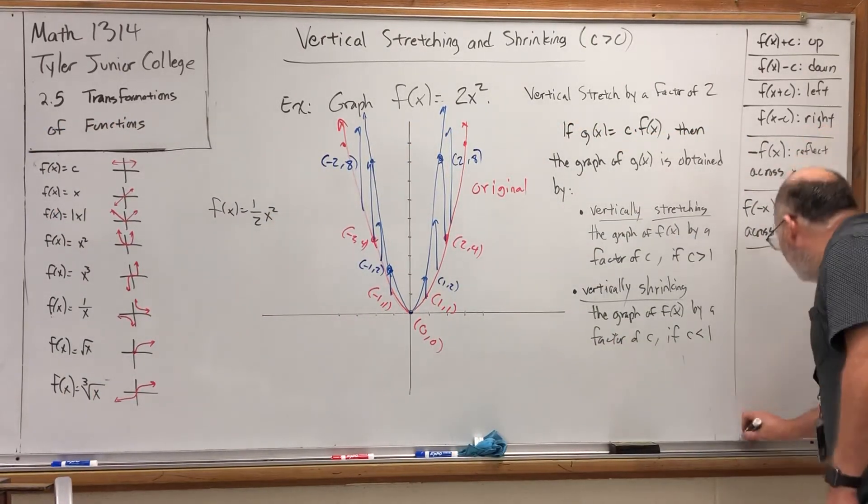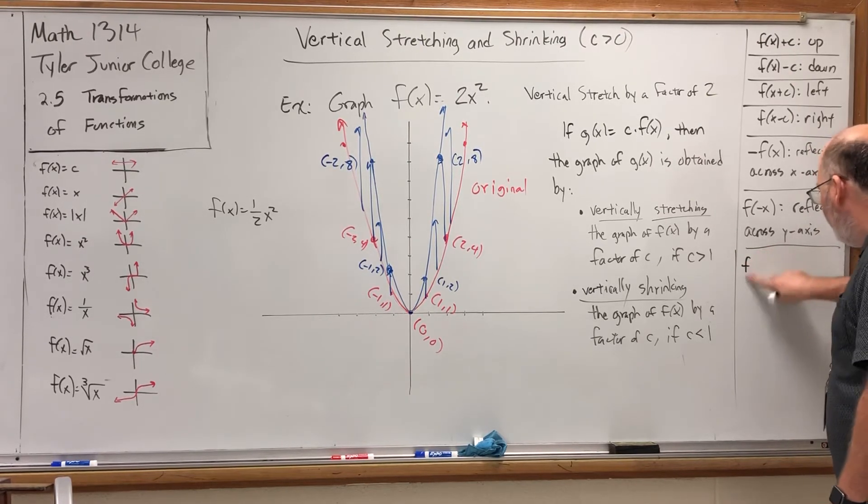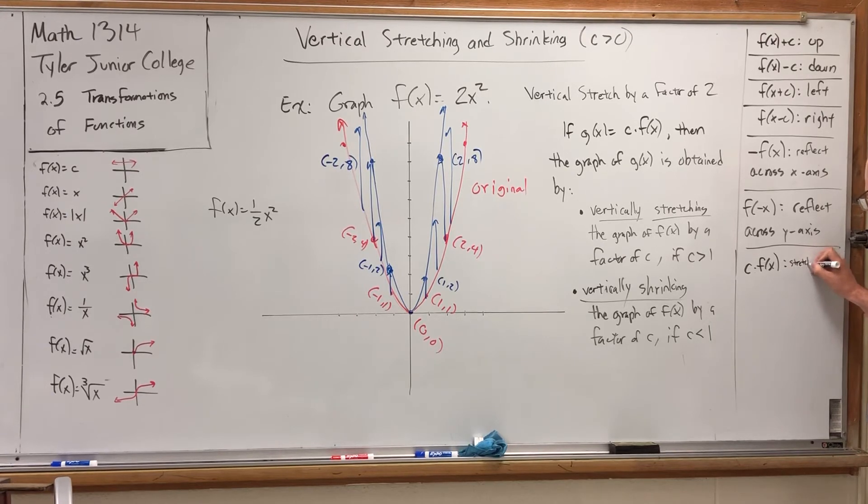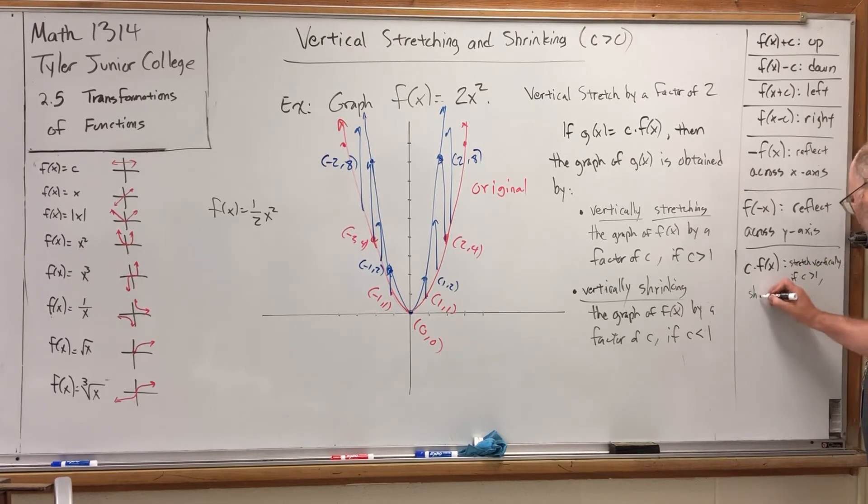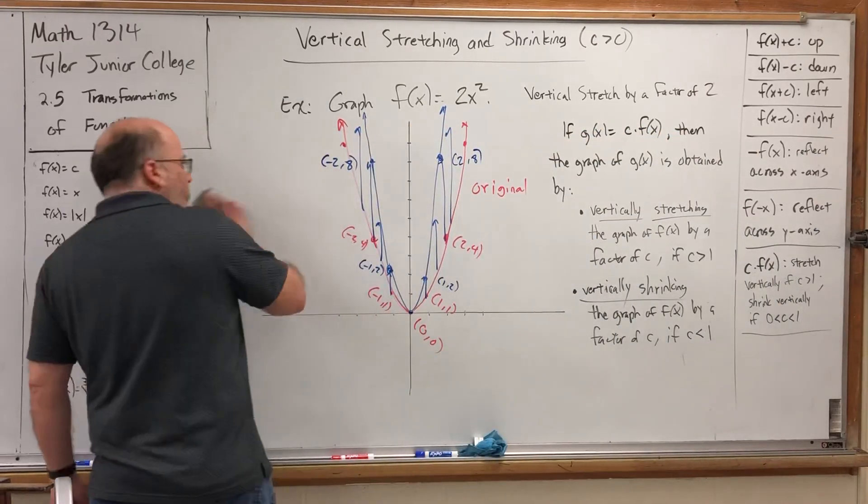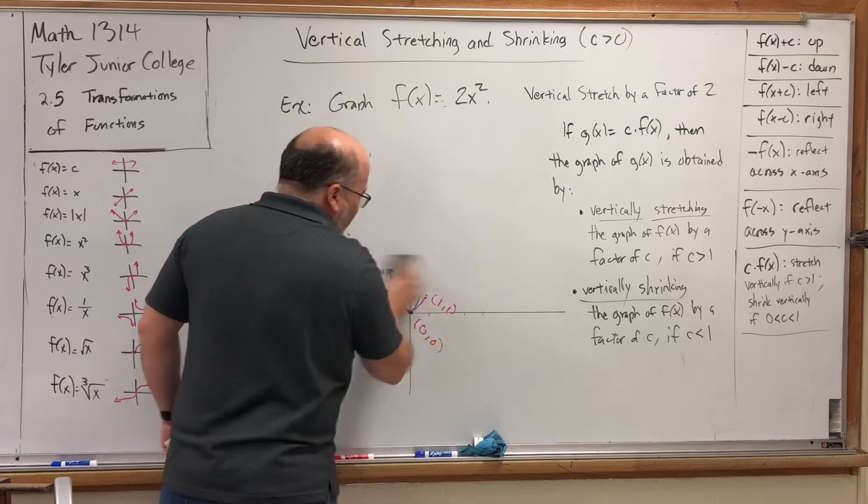Let's summarize that over here. c times f of x will stretch vertically if c is greater than 1, shrink vertically if 0 is less than c is less than 1. And again, we're just assuming that c is positive, and I'm explicitly saying it here. So it's straightforward. Just stretch it or shrink it according to the multiplier in front. Because this video is over.